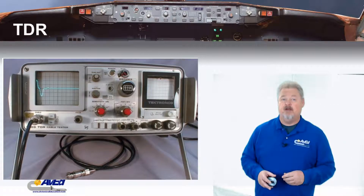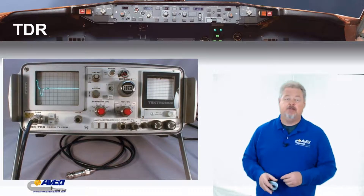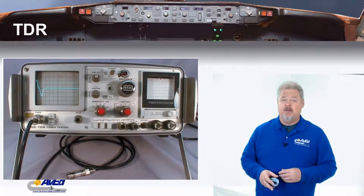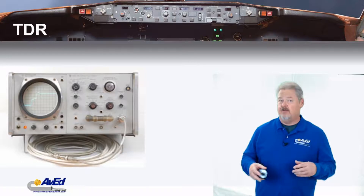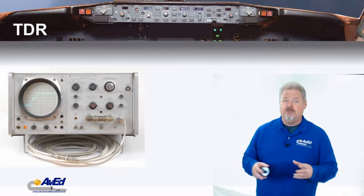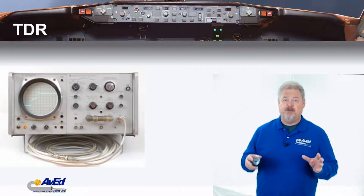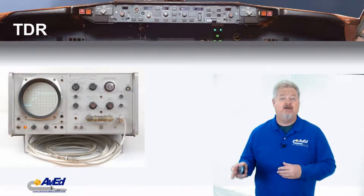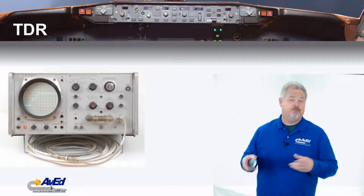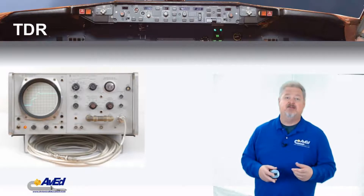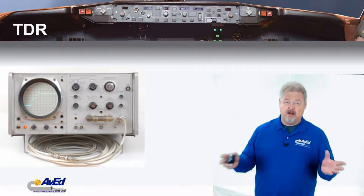Today, we're going to talk about the Time Domain Reflectometer. This particular instrument has been around for a long time, but was only used by larger airlines or engineering companies because the original units were large oscilloscope-type devices. It was designed to simply use a form of radar, sending a signal down any two-conductor wire. Originally, that would have been coax — its purpose is to find anomalies in coaxial wire in an aircraft.